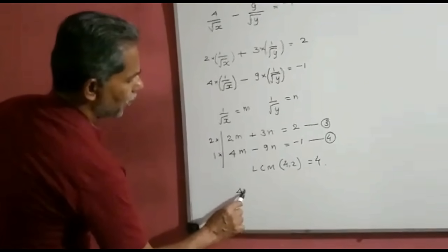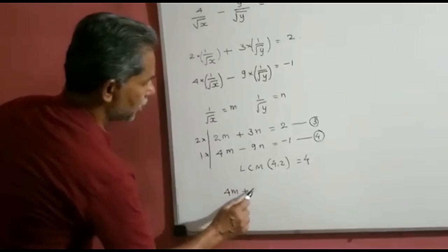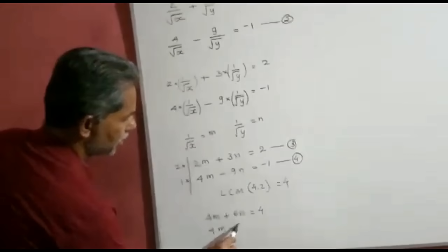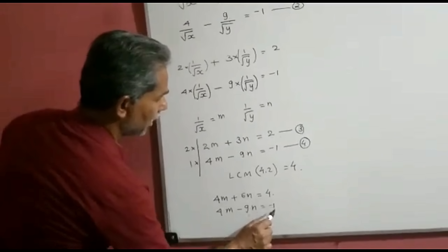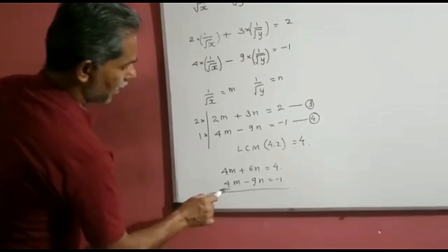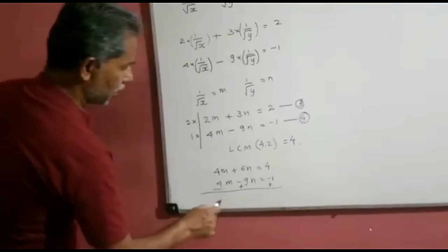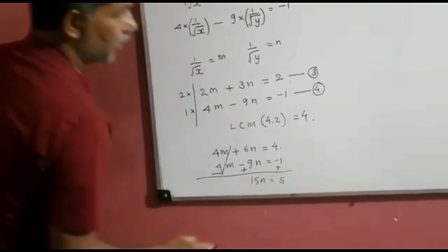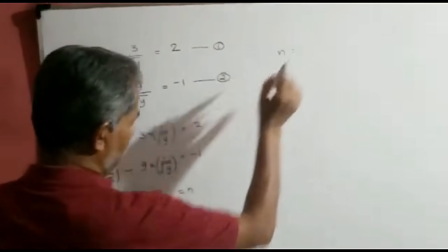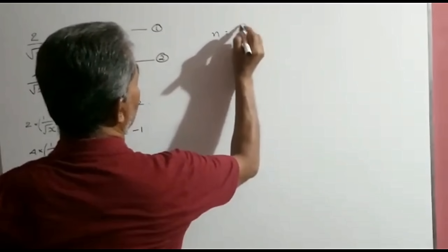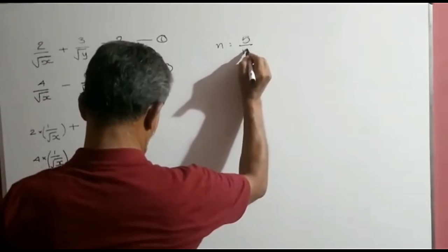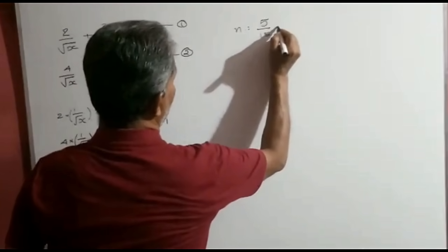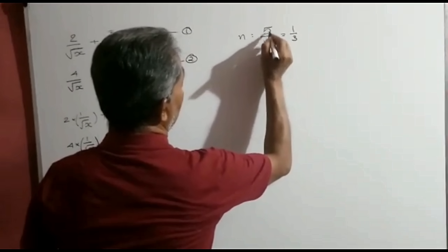So the first equation becomes 4m plus 6n is equal to 4. And the second equation: 4m minus 9n is equal to minus 1. Subtracting and eliminating 4m, we get 15n is equal to 5. That gives n is equal to 5 upon 15, which is equal to 1 upon 3.